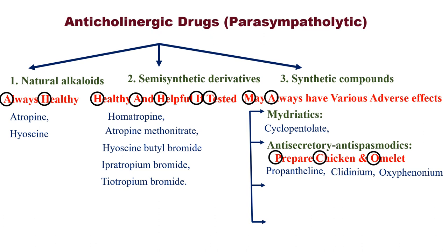V stands for Vesico-selective. CO means carbon dioxide — if you see CO (carbon dioxide) you will always remember oxygen. So the example is Oxybutynin.